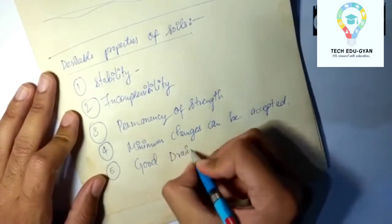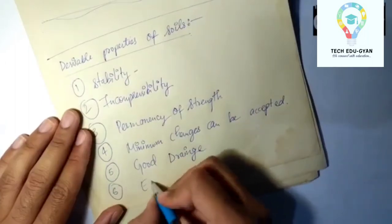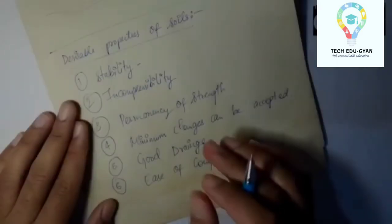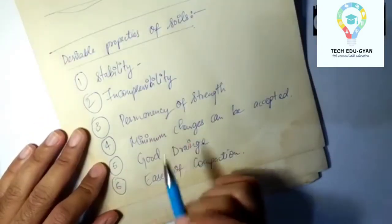The fifth one is there should be good drainage. And the sixth point is our soil should be workable and there should be ease of compaction. So these are the six desirable properties that we desire from our soil.